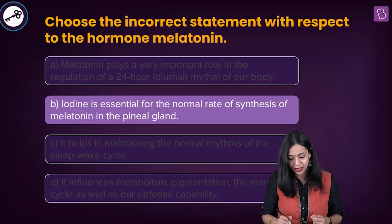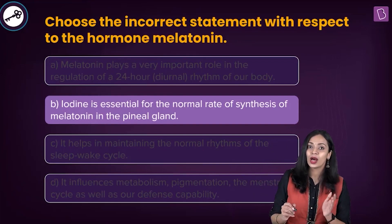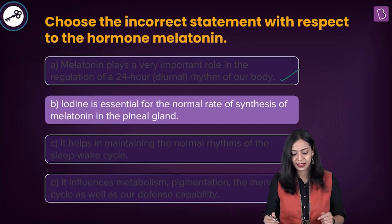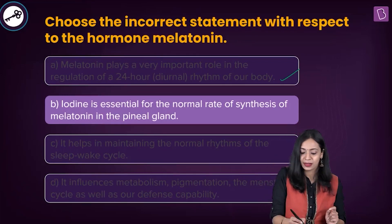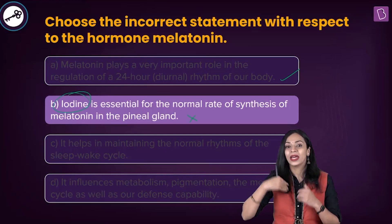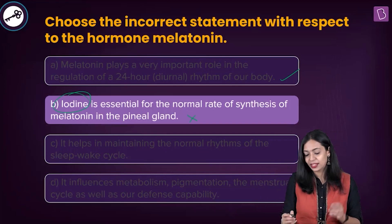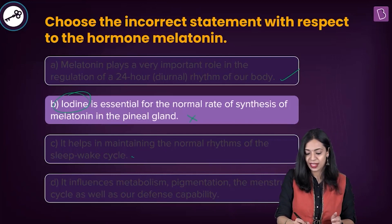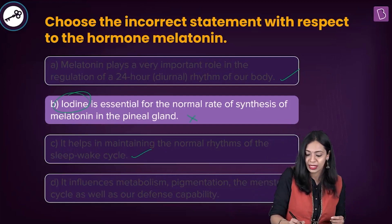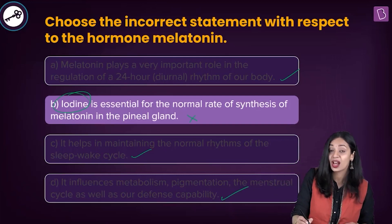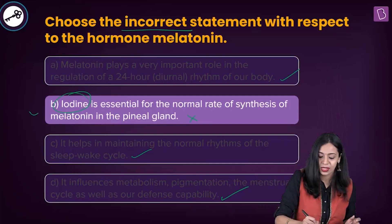Option A — melatonin plays a very important role in the regulation of a 24-hour or diurnal rhythm — is correct. Option B — iodine is essential for normal rate of synthesis of melatonin in the pineal gland — is incorrect, because iodine is not required for melatonin synthesis; it is required for synthesis of thyroid hormones. Option C — it helps maintain normal rhythms of the sleep-wake cycle — is correct. Option D — it influences metabolism, pigmentation, menstrual cycle, and defense capability — is also correct. Since we are asked for the incorrect statement, the correct answer is option B.